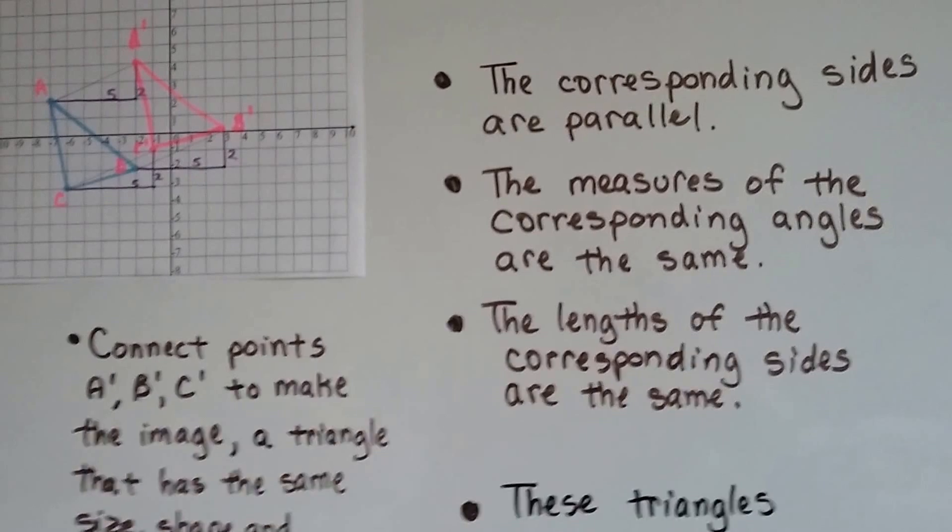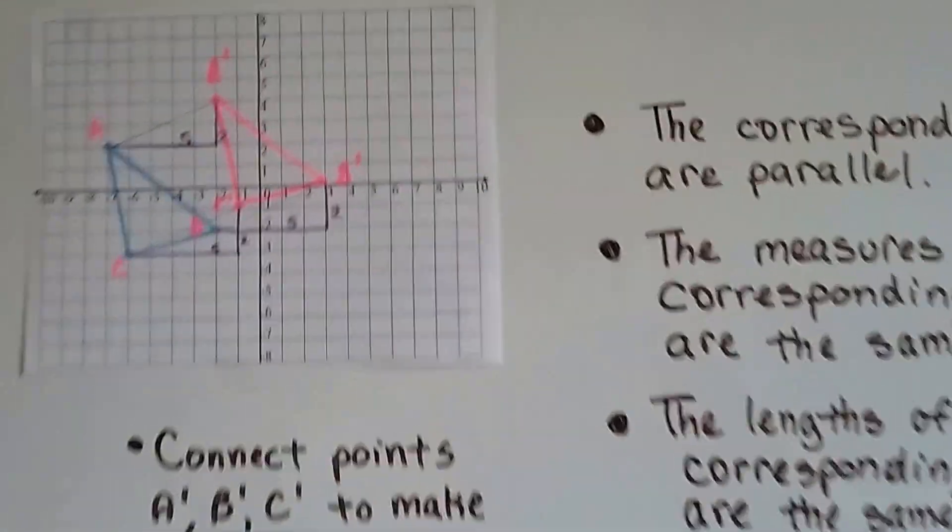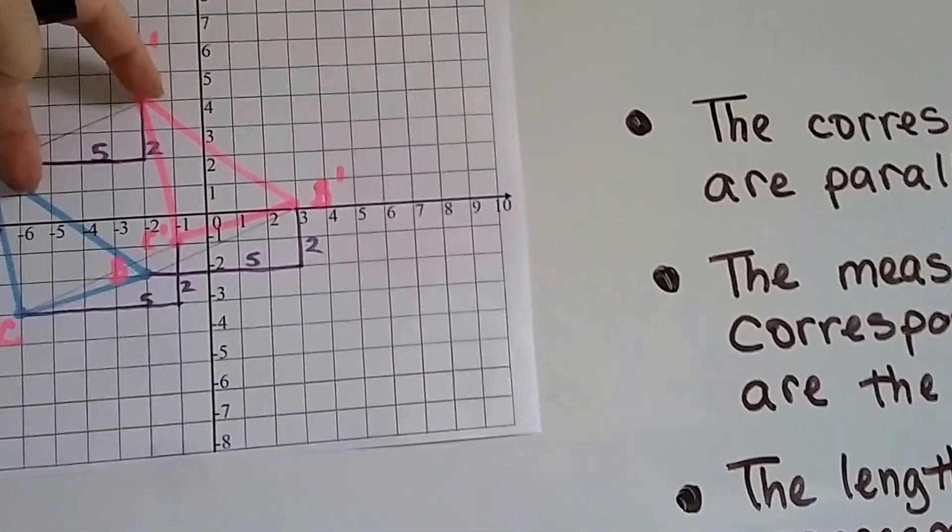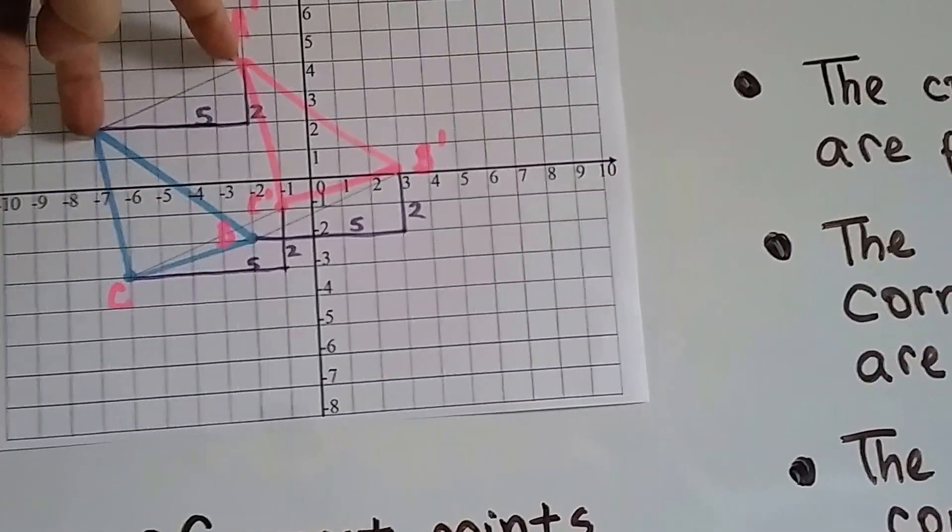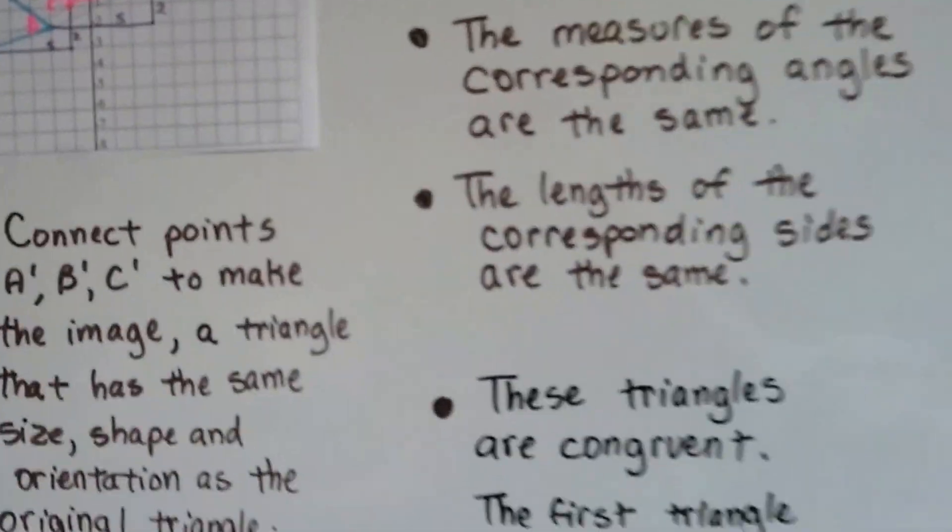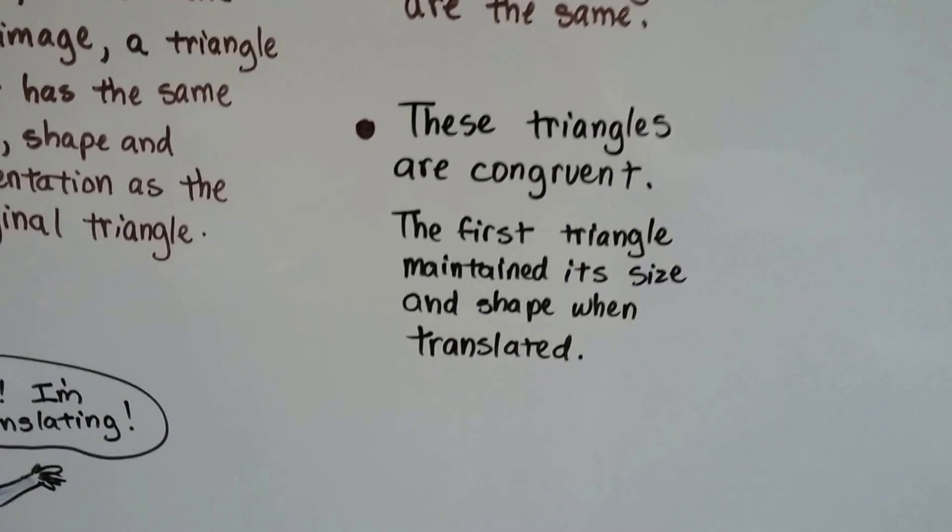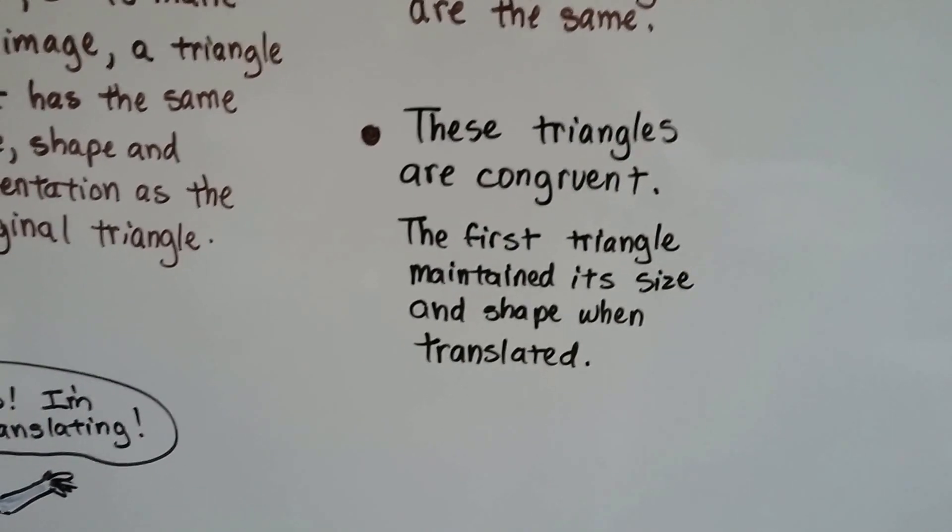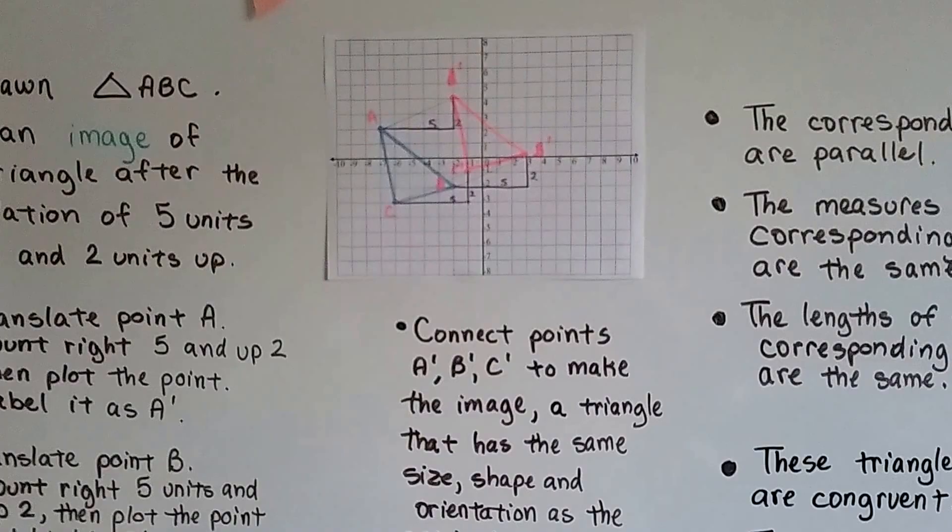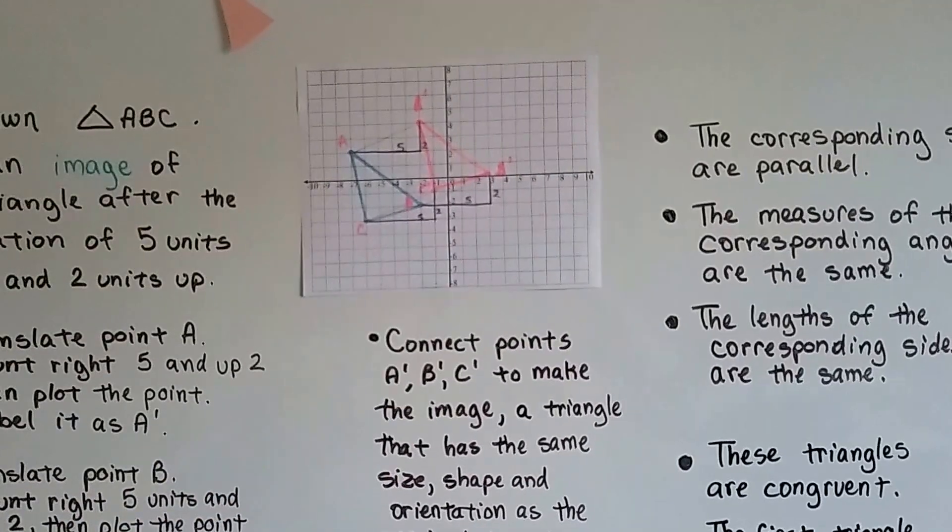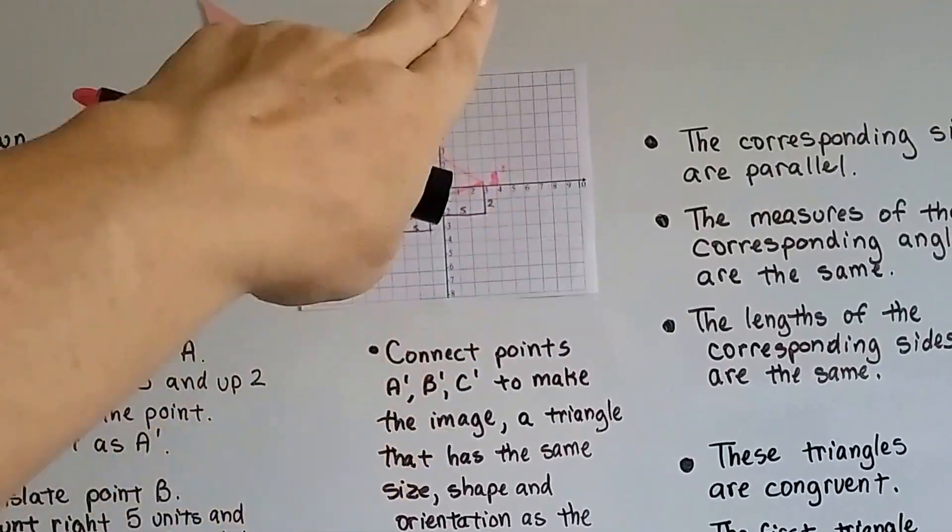The lengths of the corresponding sides are the same. These two sides are the same length, these two sides are the same length, and these two sides are the same length. So, guess what? These triangles are congruent. The first triangle maintained its size and shape when it was translated, and it just slid over. It slid 5 over and 2 up.